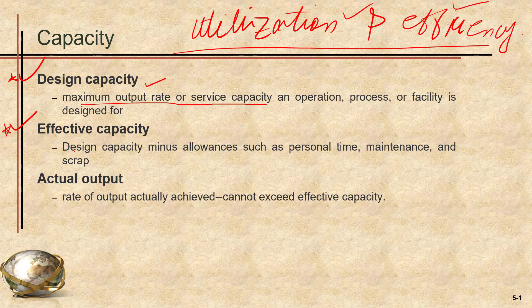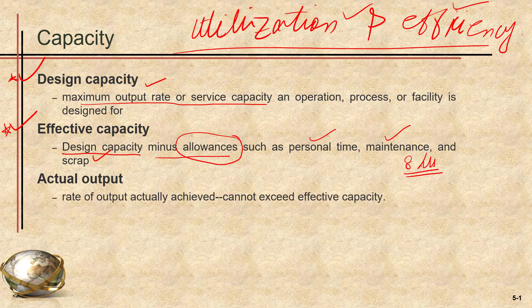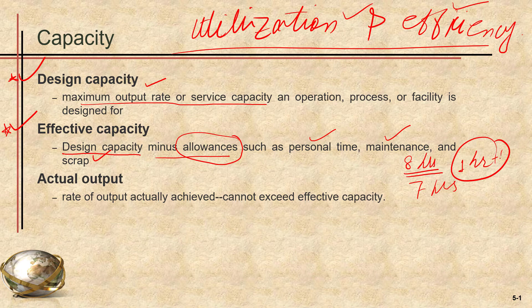In order to identify the effective capacity, that would be the design capacity — that means the maximum throughput rate — minus allowances. Allowances are factors affecting our capacity such as personal time, planned maintenance, scrap, and rework. For example, if our shift is 8 hours, our design capacity is 8 hours. But if we take a 1-hour break, our effective capacity is 7 hours. If we also spend half an hour on planned maintenance, our effective capacity would be 6.5 hours.